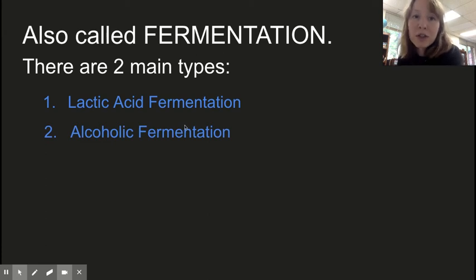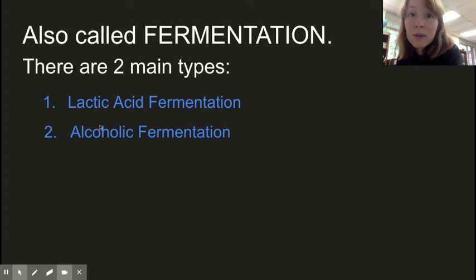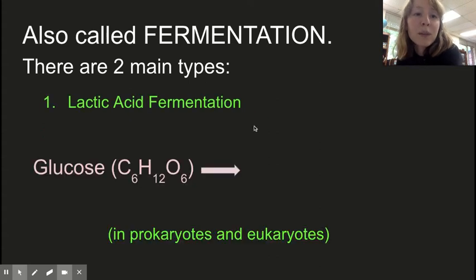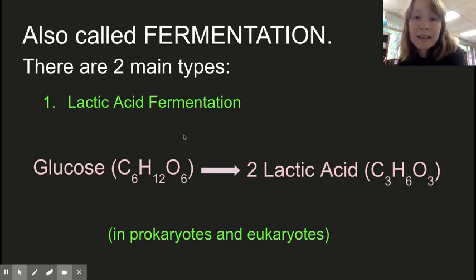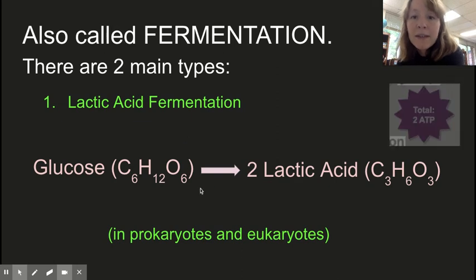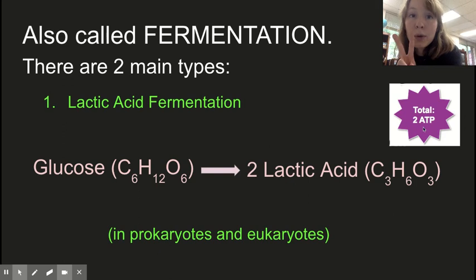Fermentation refers to the breakdown of sugars into other compounds. Respiration breaks down glucose to make ATP, and these two fermentation types can produce byproducts used in certain foods. In lactic acid fermentation, glucose is converted into two lactic acid molecules. Some energy in that glucose is released — enough to make two ATP total. Not 36, only two.